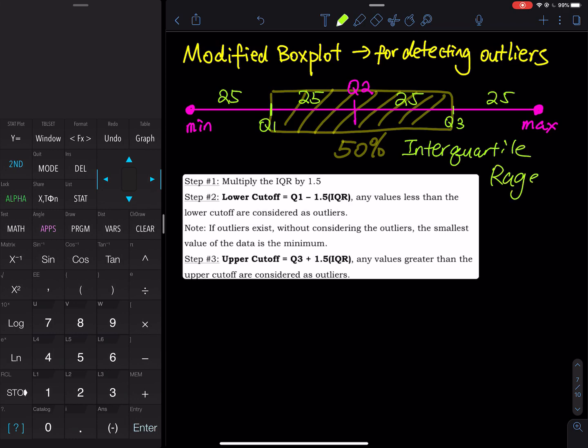Interquartile range is the middle 50% of the data. How do you calculate the interquartile range? The interquartile range, we call this IQR. IQR is equal to Q3 minus Q1. That is the middle 50% of the data.